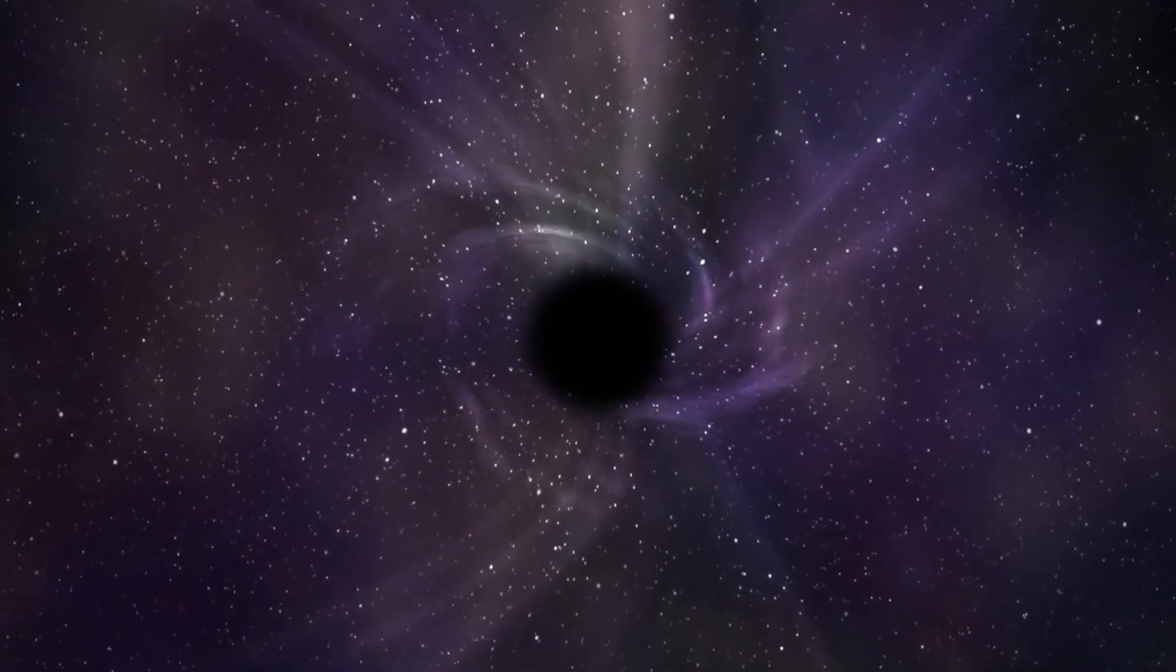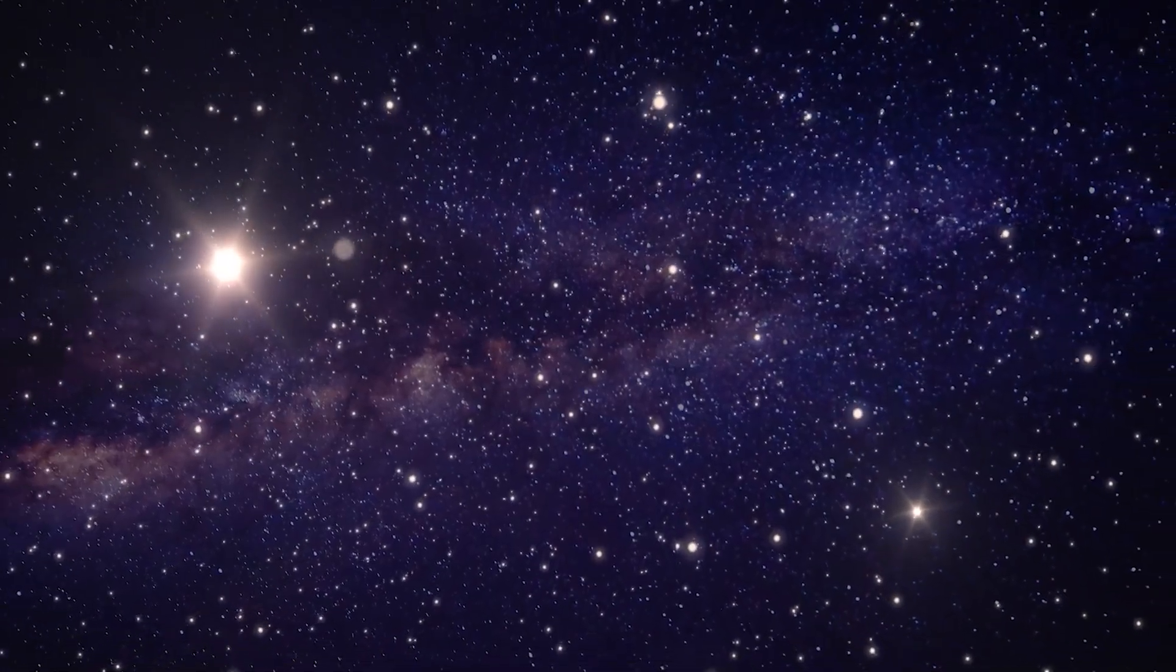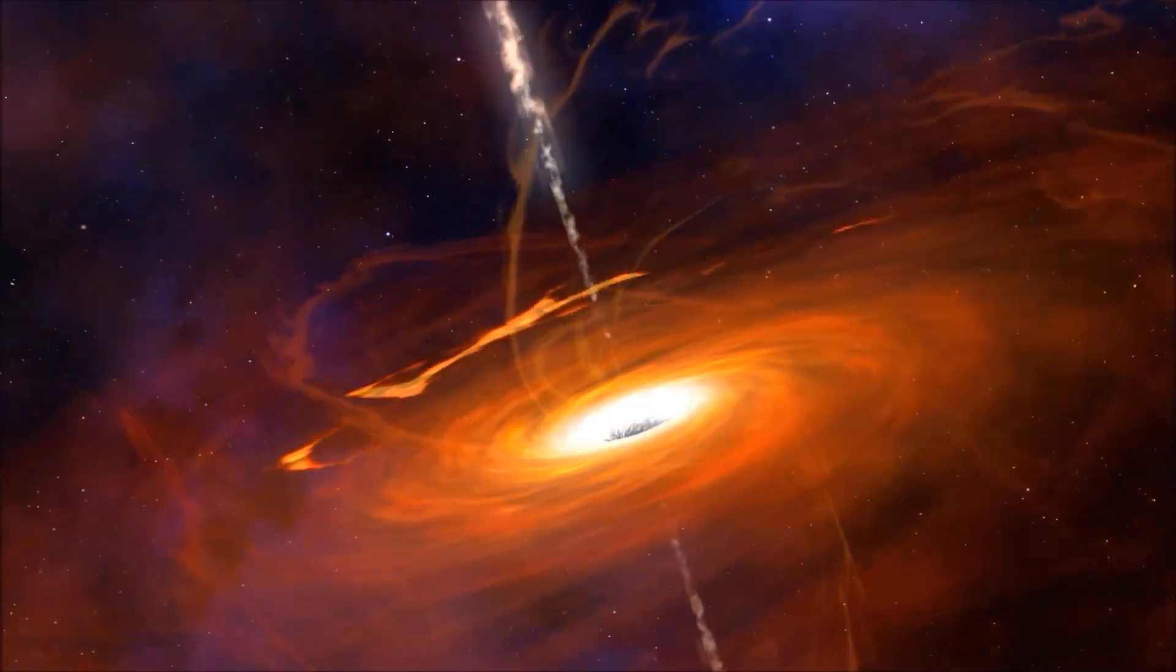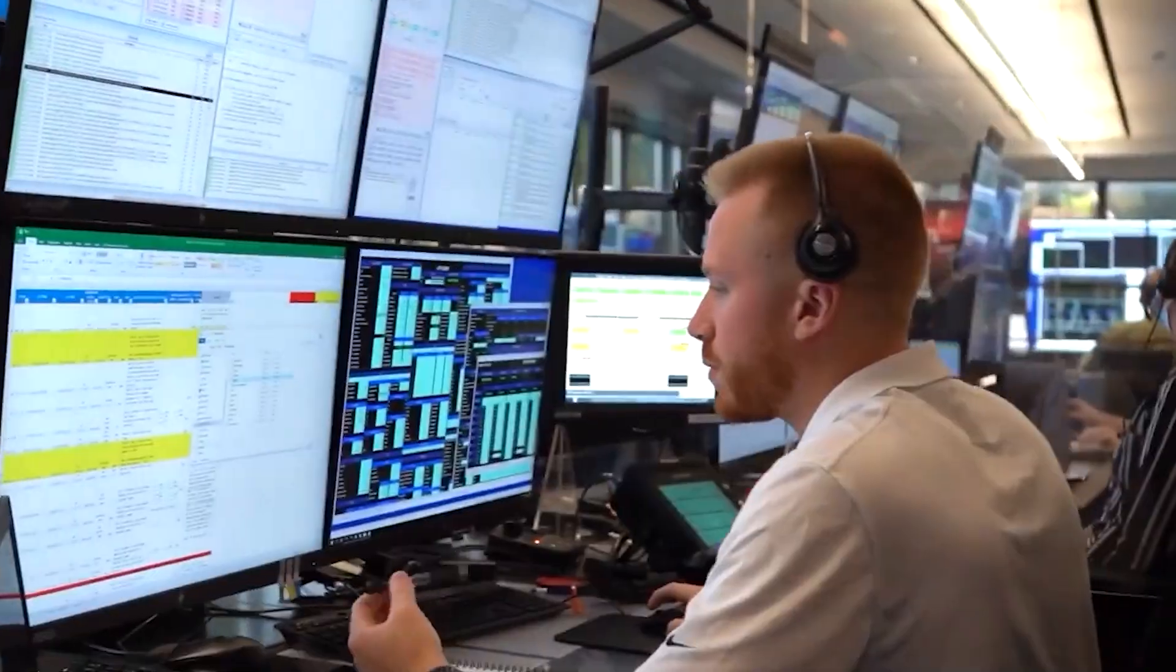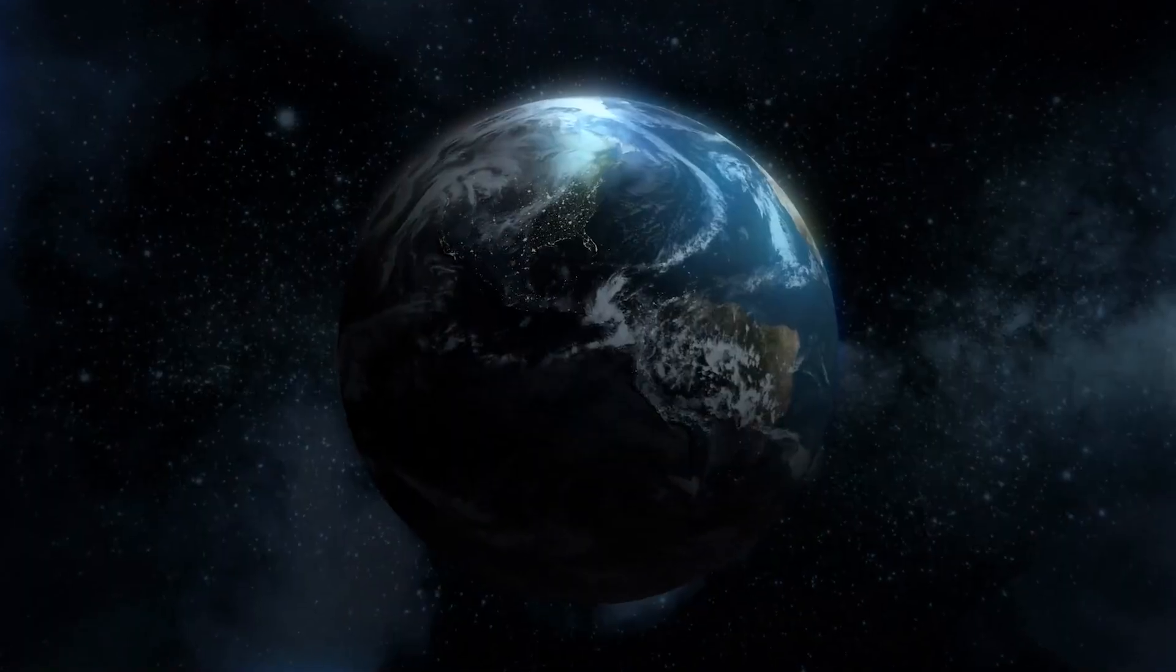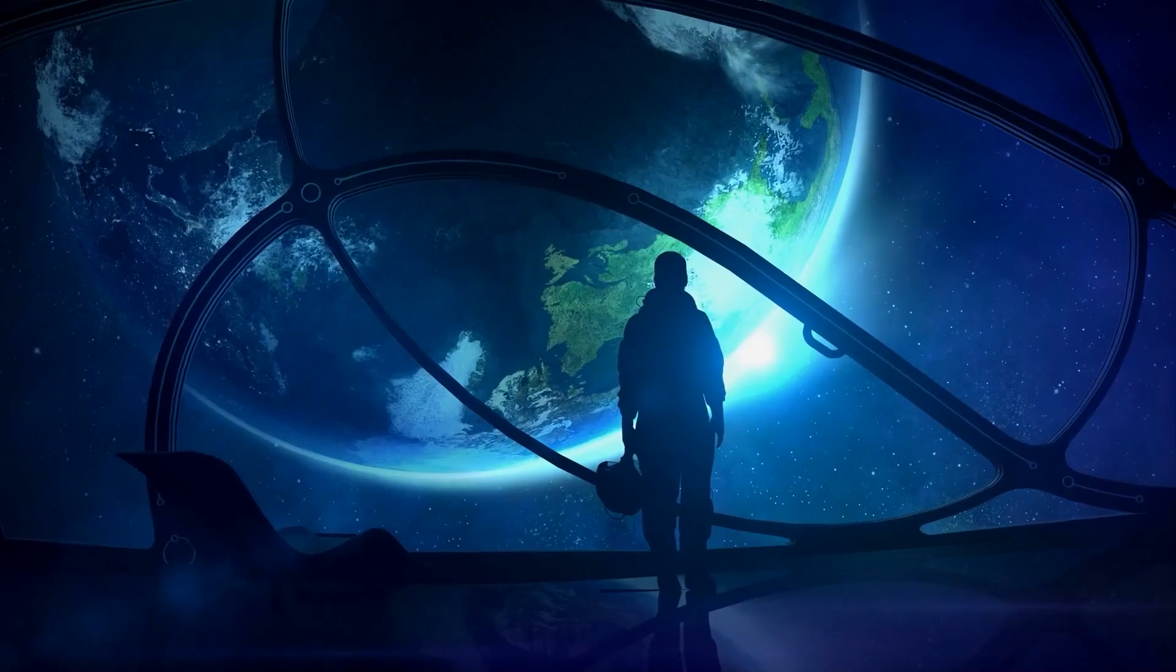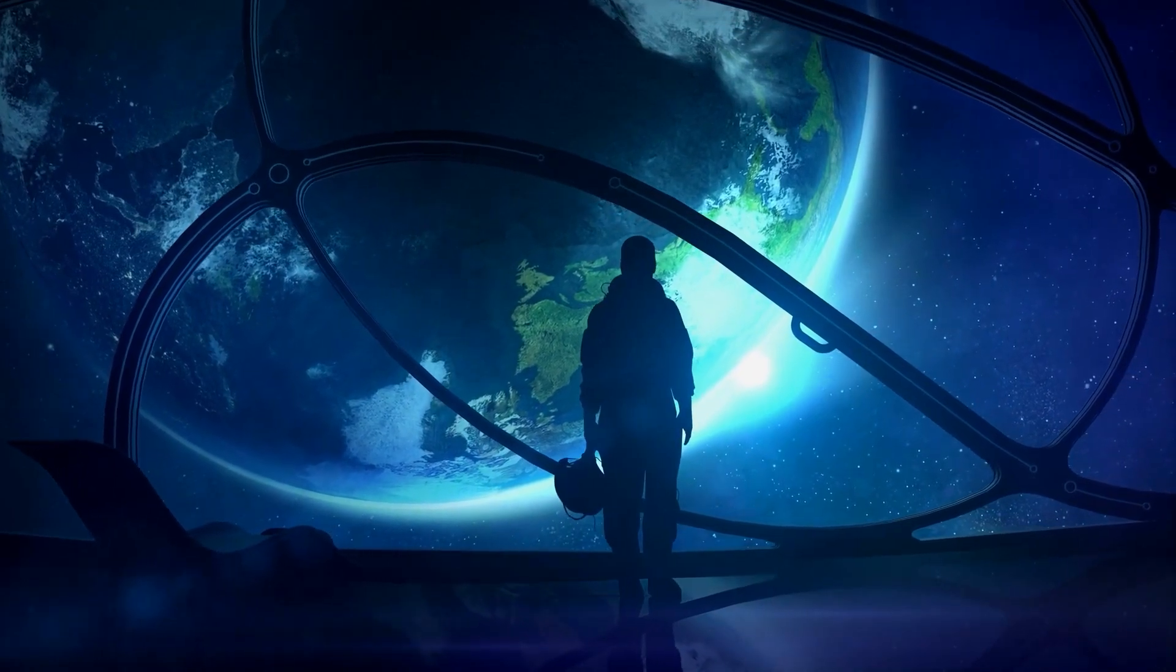Scientists state that there could be 12 rogue black holes in the Milky Way galaxy alone. A black hole will swallow Earth so quickly that there won't be time to be shocked. There is a very low possibility of any coming close to Earth anytime soon, but we still rank this S, because should it ever become a possibility, we are done.